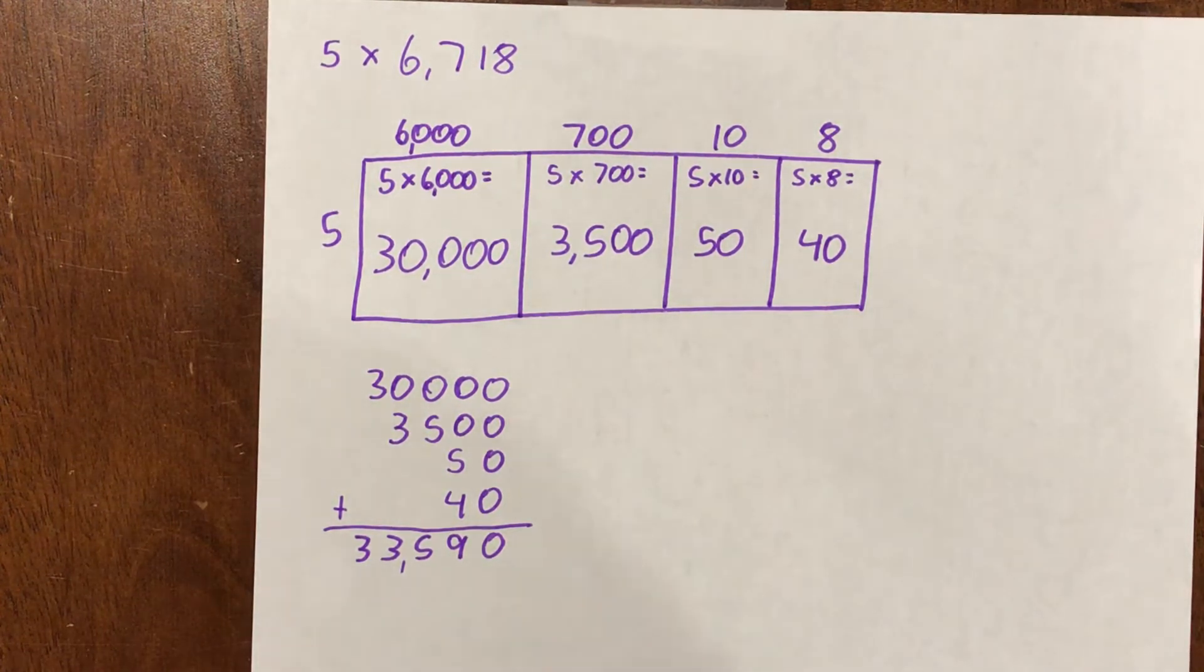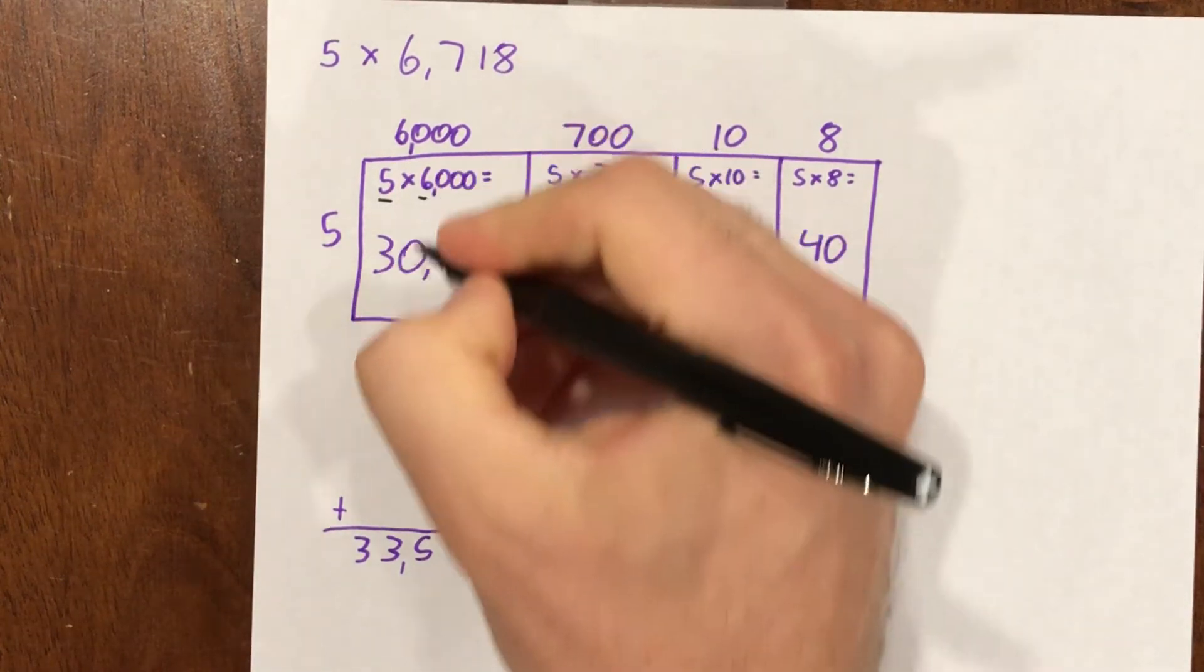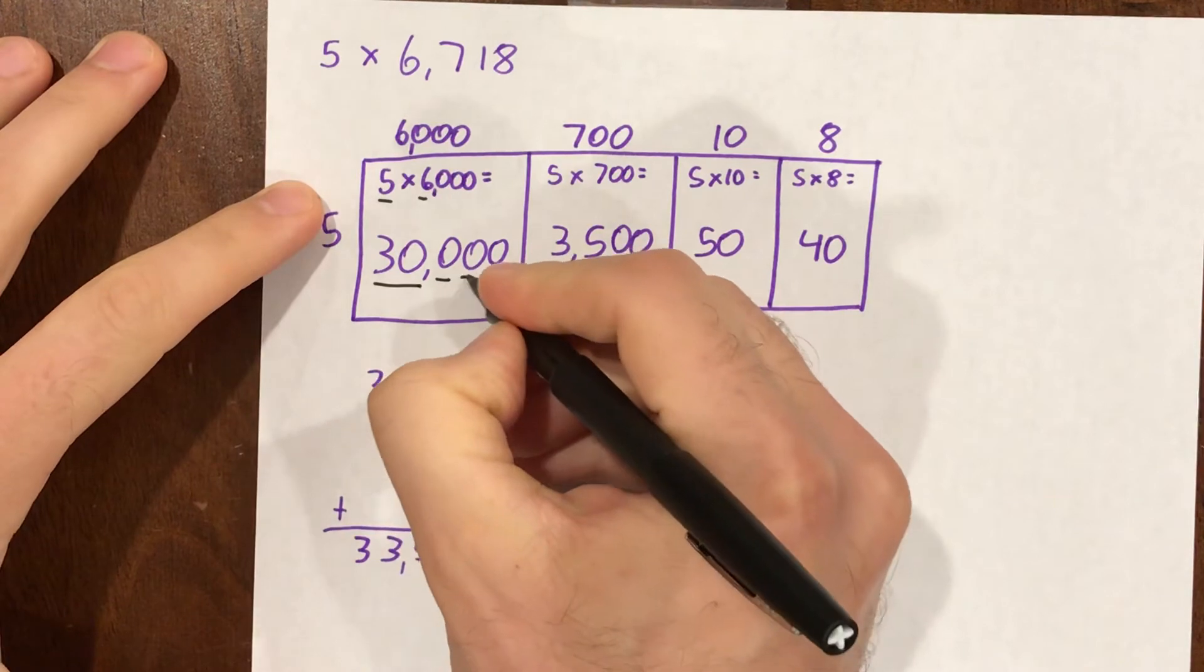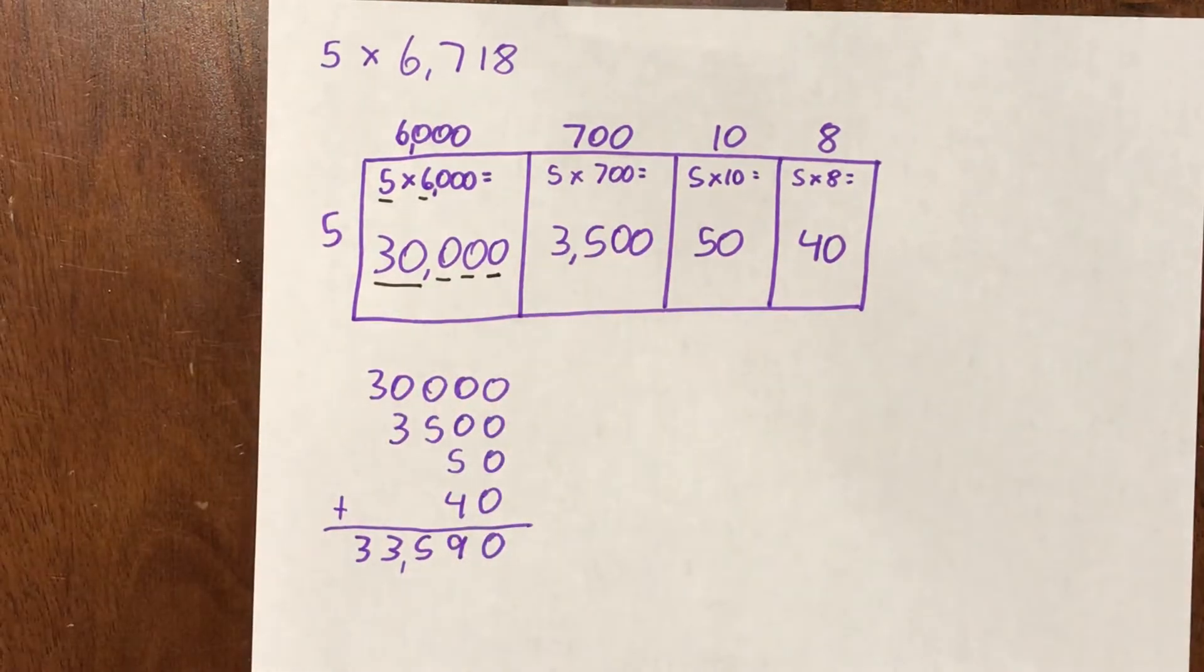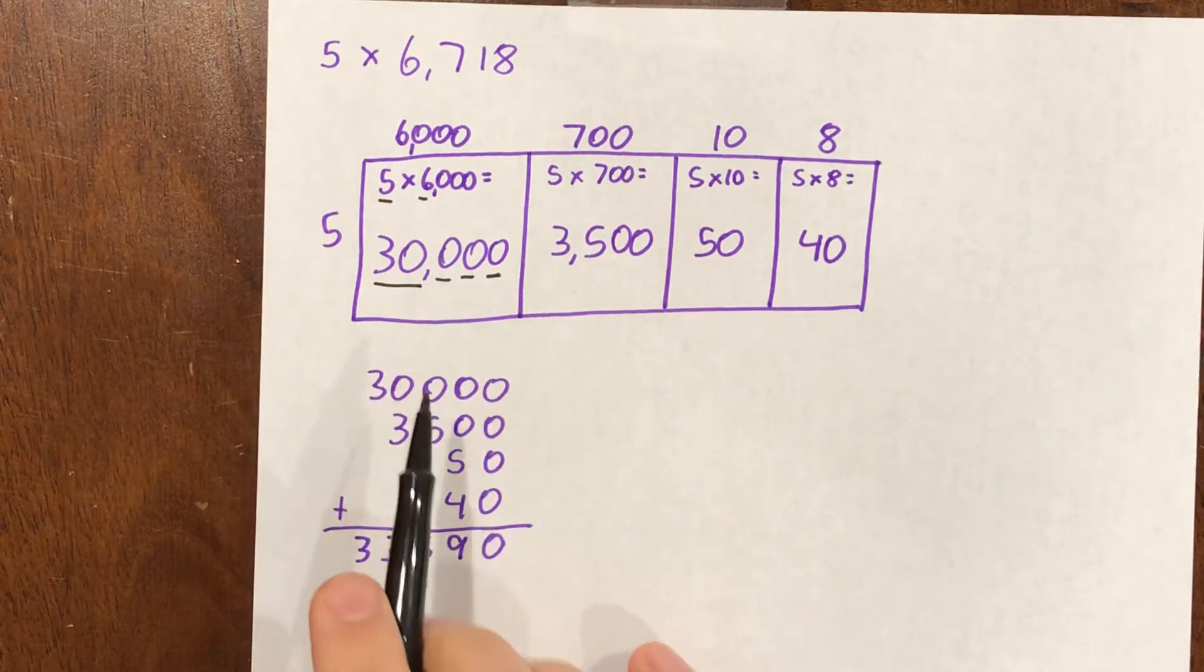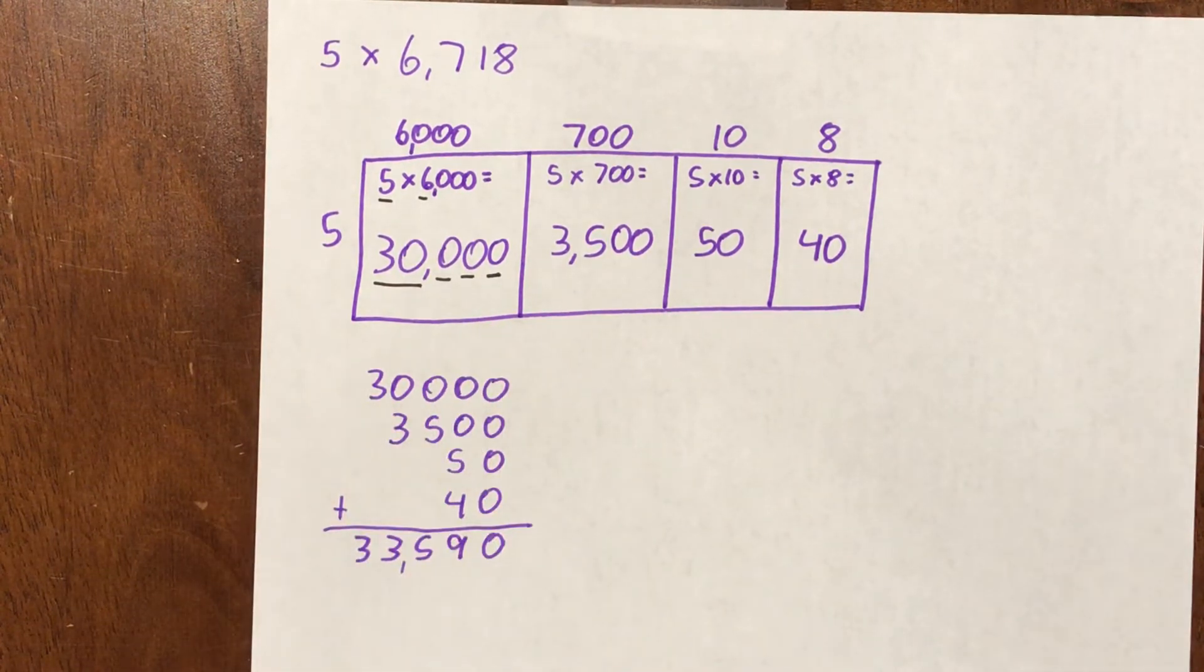Yeah, my basic fact was 5 times 6, that gave me 30, and then I had to add 1, 2, 3 zeros, because that 6 was 6 thousands. So now I've got 30 thousands, or 30,000.